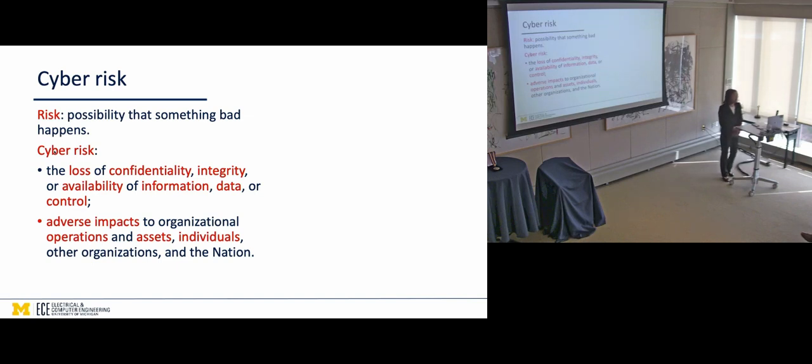If you look at the bad things that can happen in a cyber system, it has to do with a loss of confidentiality, integrity, availability of information, data, or control. And this is by the definition of NIST cybersecurity framework. And the risk is associated with adverse impacts to organizations' ability to operate their assets, individuals, other organizations, and so forth.